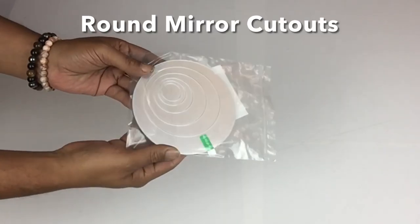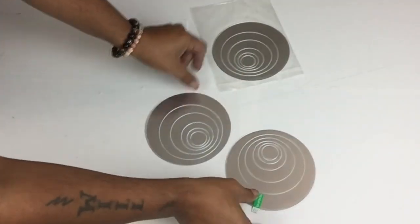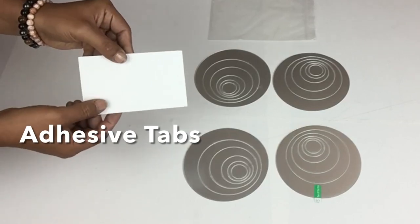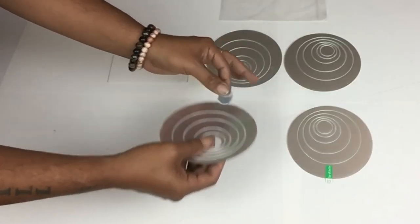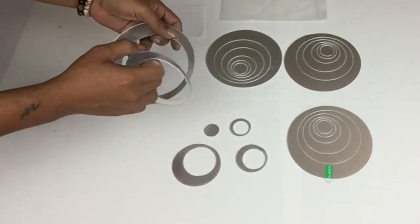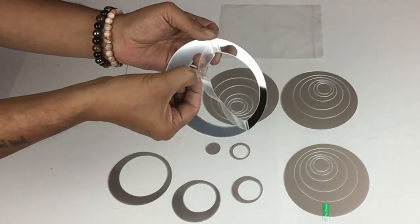Next I'll be using round mirror cutouts. You get a stack of four in a pack and a total of 24 mirror cutouts. Also in the pack comes self-adhesive tabs, and these are very easy to use - you just snap them apart. And they also come with protective film to protect from fingerprints.